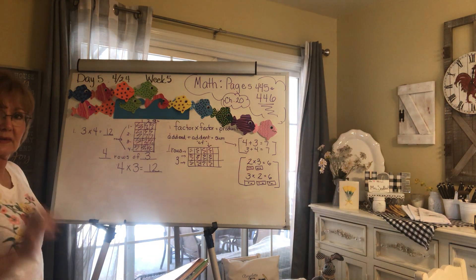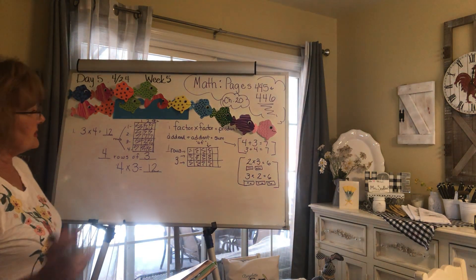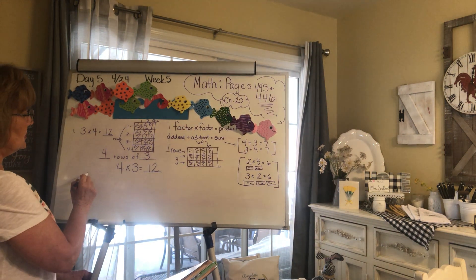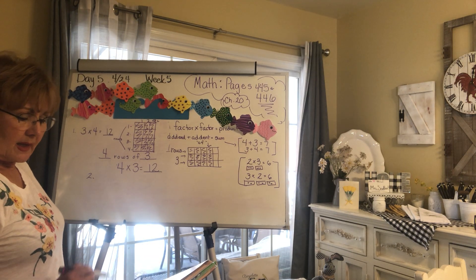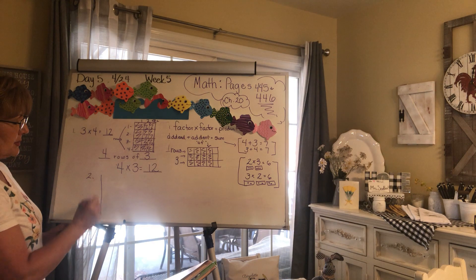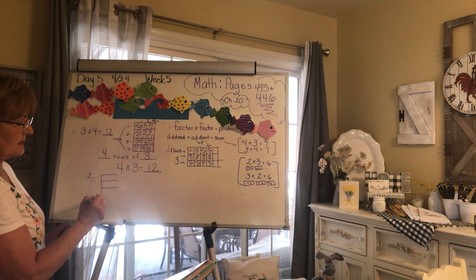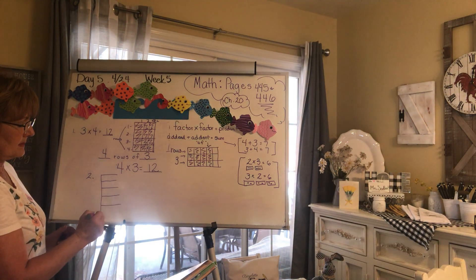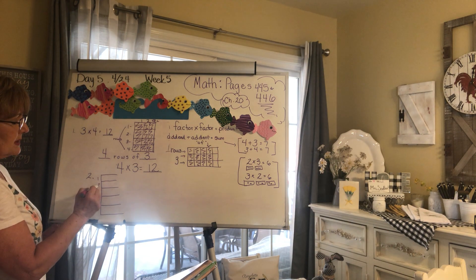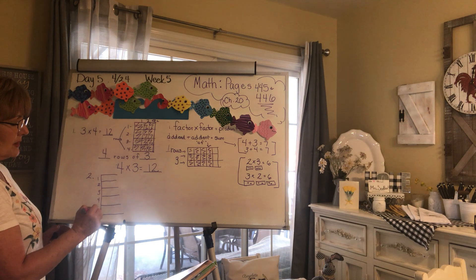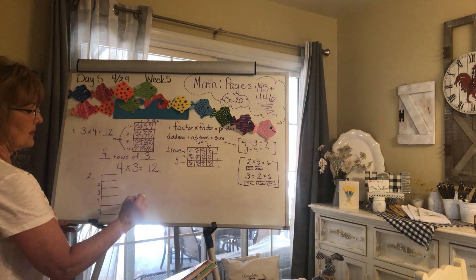Either way you get the same answer. Go down to number two. Look at the purple — how many rows do you have? One, two, three, four, five — so you want to write five rows.